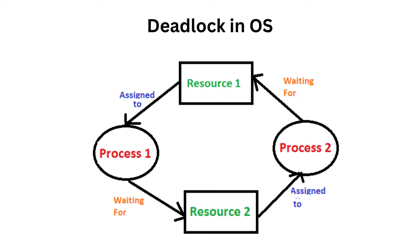Deadlock is a critical issue in synchronization, where tasks get stuck waiting for resources held by each other, halting progress. To prevent deadlock, operating systems implement strategies such as resource allocation ordering and deadlock detection algorithms. Atomic operations and lock-free data structures further enhance synchronization by enabling tasks to perform compound operations on shared data without interference, ensuring efficient and reliable execution of multiple tasks.